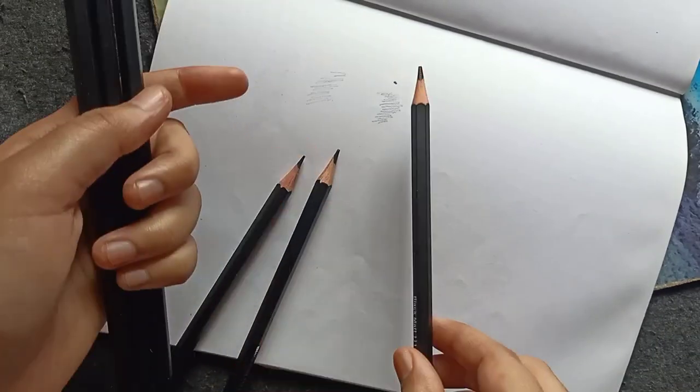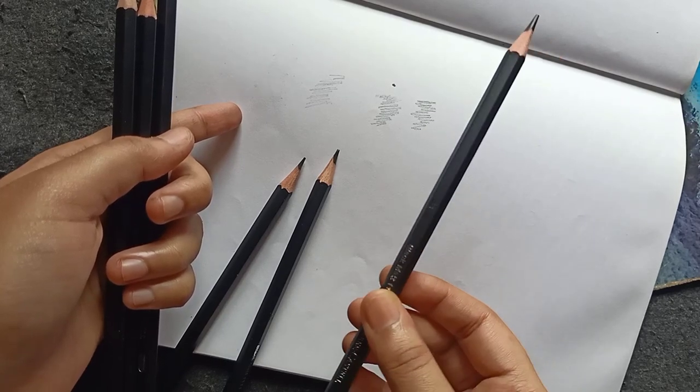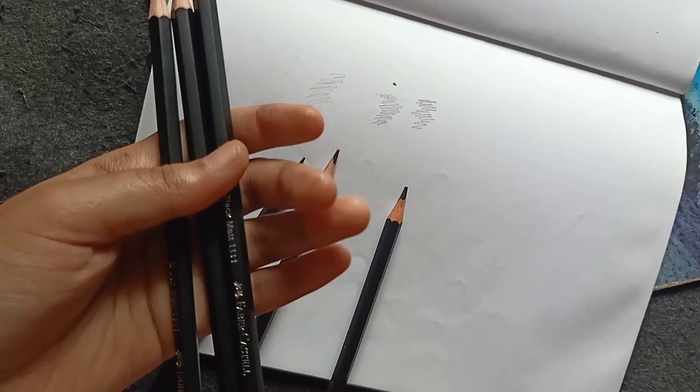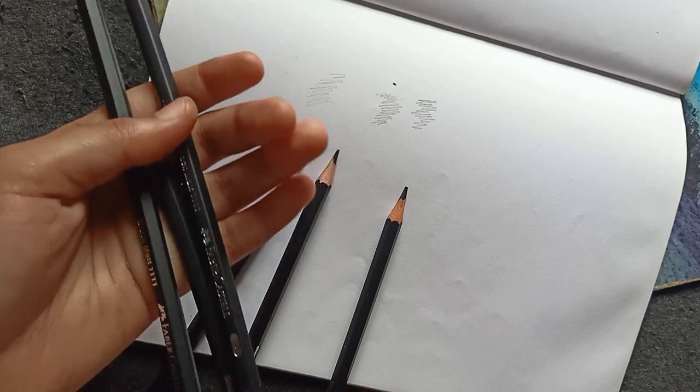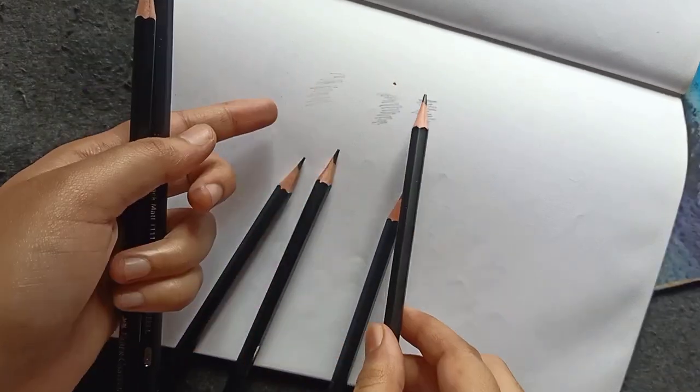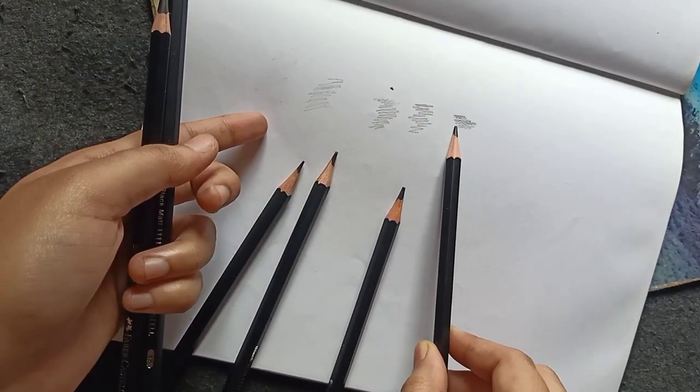This is a 4B pencil. Next is a 6B pencil. You can use these for outlines - HB, 2B, 4B, 6B, etc.